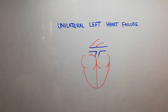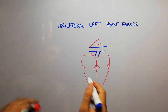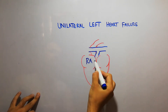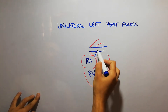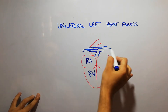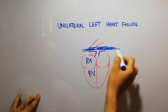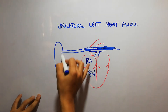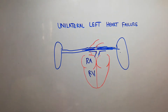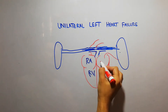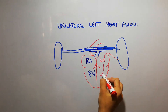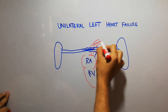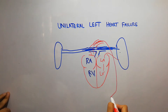Normally, deoxygenated blood comes to the right atrium, goes to the right ventricle, and from there goes through the pulmonary arteries into the lungs. In the lungs the blood gets oxygenated, comes to the left atrium, then to the left ventricle, and from the left ventricle blood goes into the aorta and out to the body.